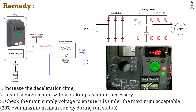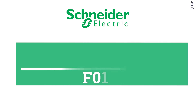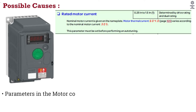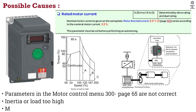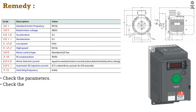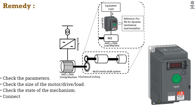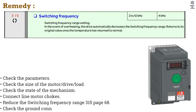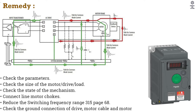Check the main supply voltage to ensure it is under the maximum acceptable. F010 Overcurrent. Possible Causes: Parameters in the Motor Control Menu 300 are not correct. Inertia or Load Too High. Mechanical Locking. Remedy: Check the Parameters. Check the Size of the Motor, Drive, and Load. Check the State of the Mechanism. Connect Line Motor Chokes. Reduce the Switching Frequency. Check the Ground Connection of Drive, Motor Cable and Motor Insulation.